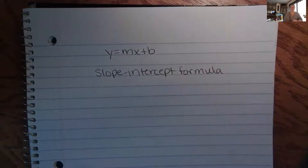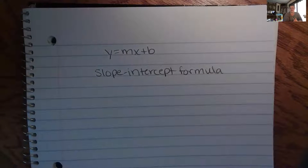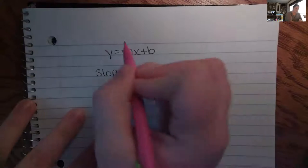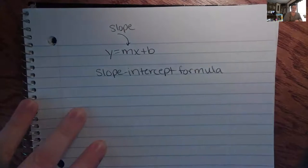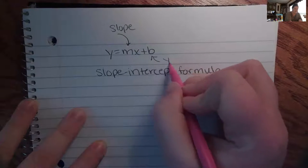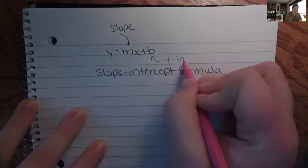You will use this over and over again when we're graphing lines. What we're going to do with it right now is use it to identify the slope and the y-intercept. The M is the letter that represents slope. The B is the y-intercept.